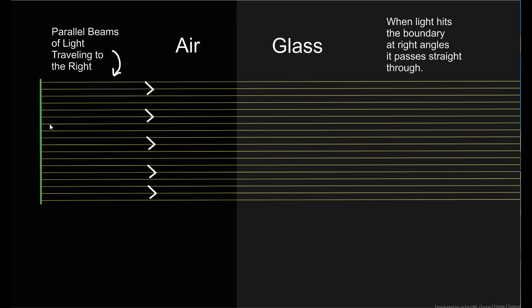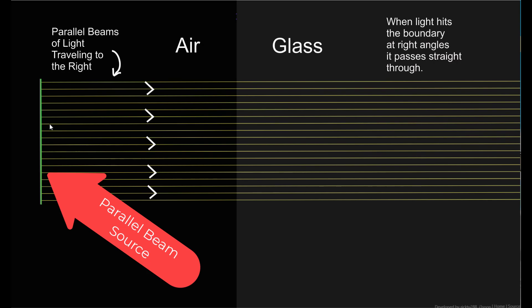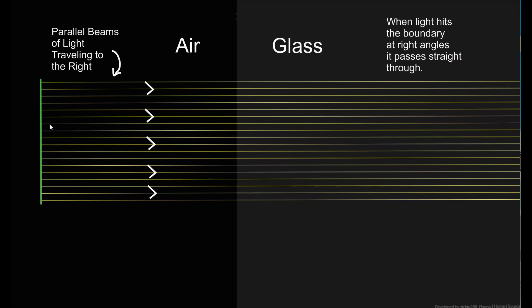I'm going to start by talking about something called refraction. Refraction is what happens when light travels from one medium to another — in this case, when light travels from air to glass. This green bar is a source of parallel beams of light. Distant objects give off beams of light that are very close to parallel; the farther away the object is, the more true this is. When the light rays hit the boundary between the air and glass at right angles to the boundary, they travel straight through.